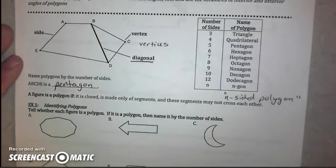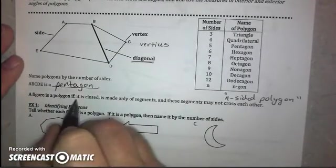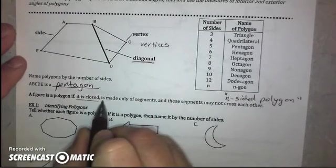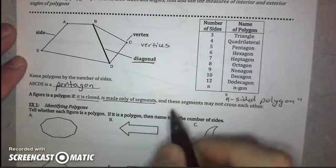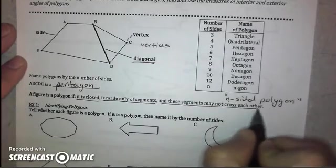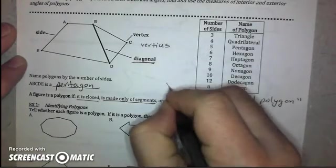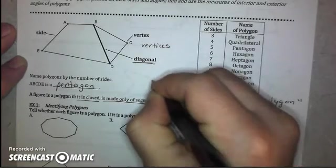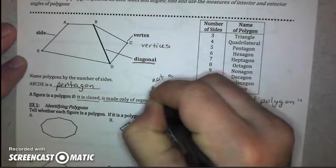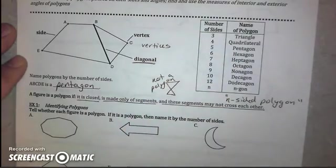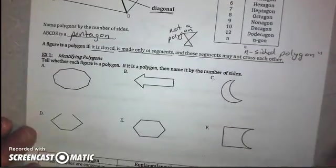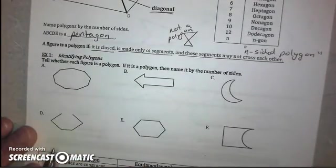So here are the ways to determine if it is, in fact, a polygon. If it's closed, that means all the sides have to connect to another side. It can only be made up of segments, no curves, and those segments cannot cross each other. This is not a polygon because we have the sides crossing each other.